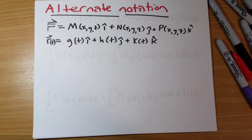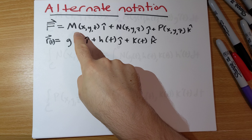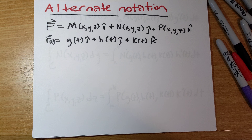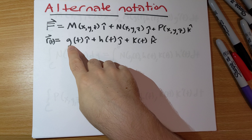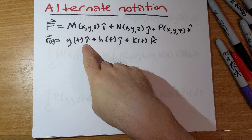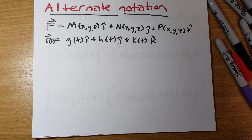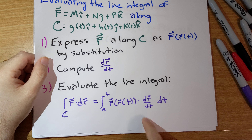This is just setup for the definitions here. We'll be writing f as a function M of xyz times i-hat, plus N of xyz times j-hat, plus P of xyz times k-hat. Our parameterization r of t is g(t) i-hat plus h(t) j-hat plus k(t) k-hat.